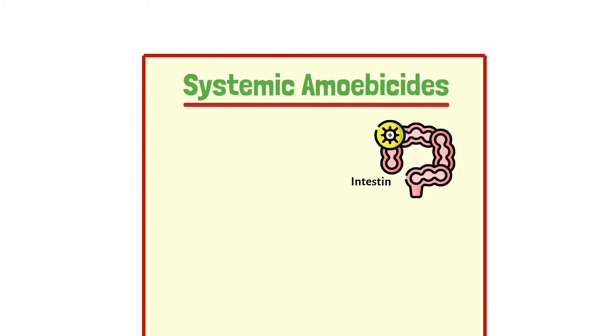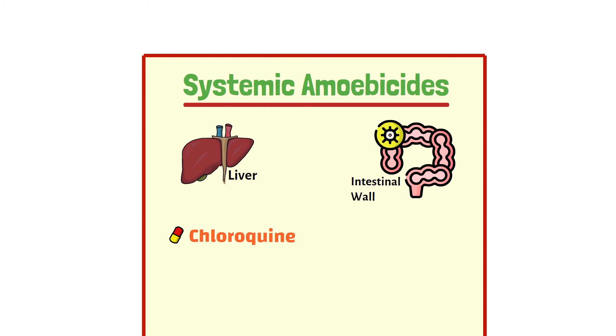Next we have the systemic amoebicides. Systemic amoebicides are effective against the amoebas in the intestinal wall and liver. These agents include chloroquine and dehydroemetine. Chloroquine is used in combination with metronidazole, or instead of metronidazole in case of any restriction or intolerance on the use of metronidazole.